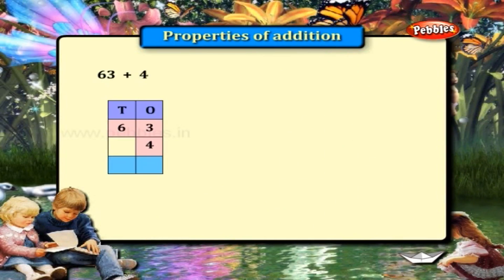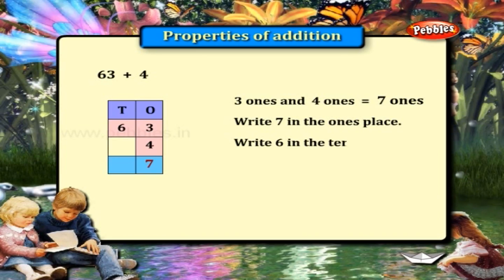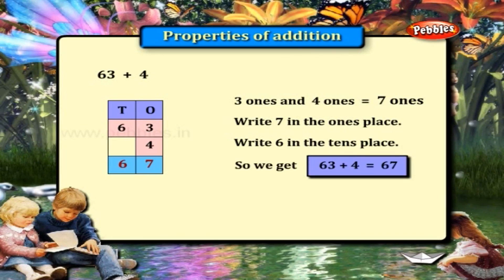63 plus 4. That is 3 ones and 4 ones is equal to 7 ones. Write 6 in the tens place. So we get 63 plus 4 is equal to 67.